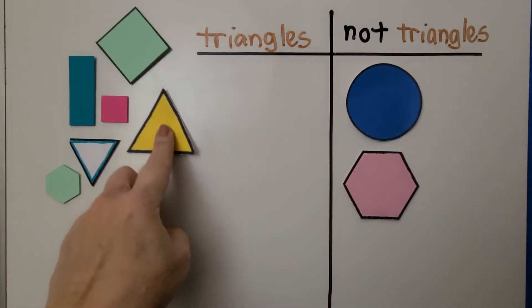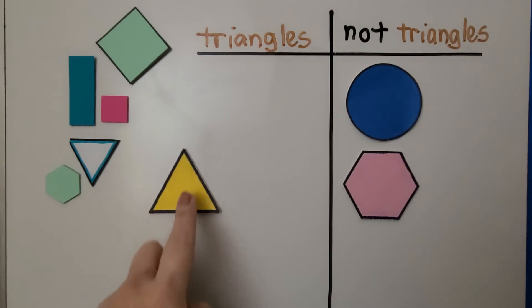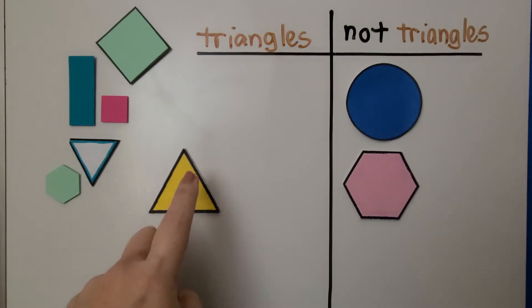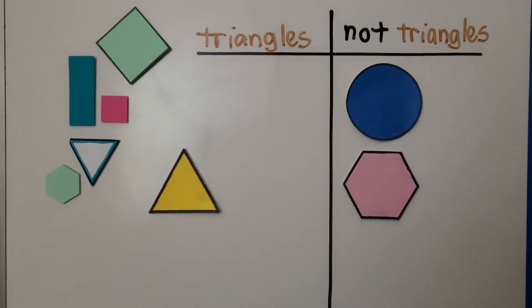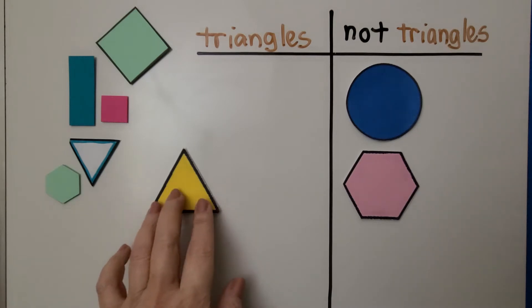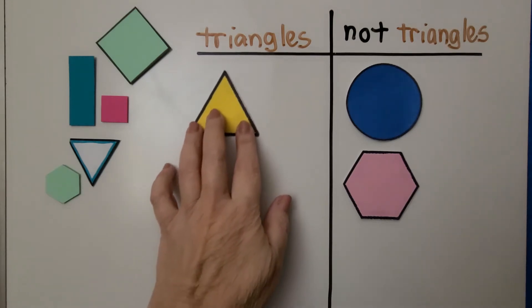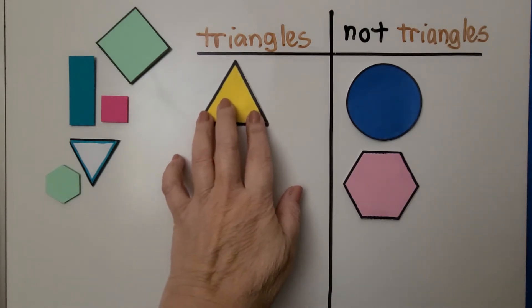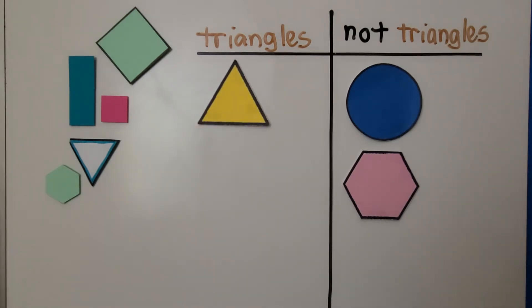Is this a triangle? It has one, two, three straight sides. Yes. If you said that's a triangle, you're right. We could put it here in the set for triangles.